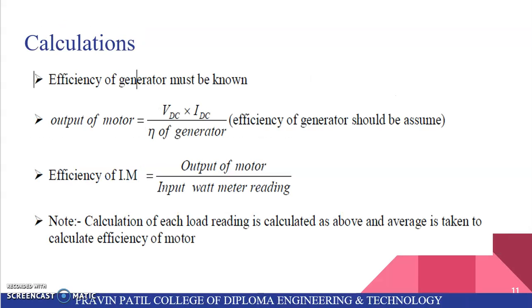Next is calculations. Efficiency of generator must be known. Output of motor is equal to VDC into IDC upon efficiency of generator. So efficiency of generator should be assumed. Next, efficiency of induction motor is equal to output of motor upon input wattmeter reading. Note: calculation of each load reading is calculated as above and average is taken to calculate efficiency of motor.